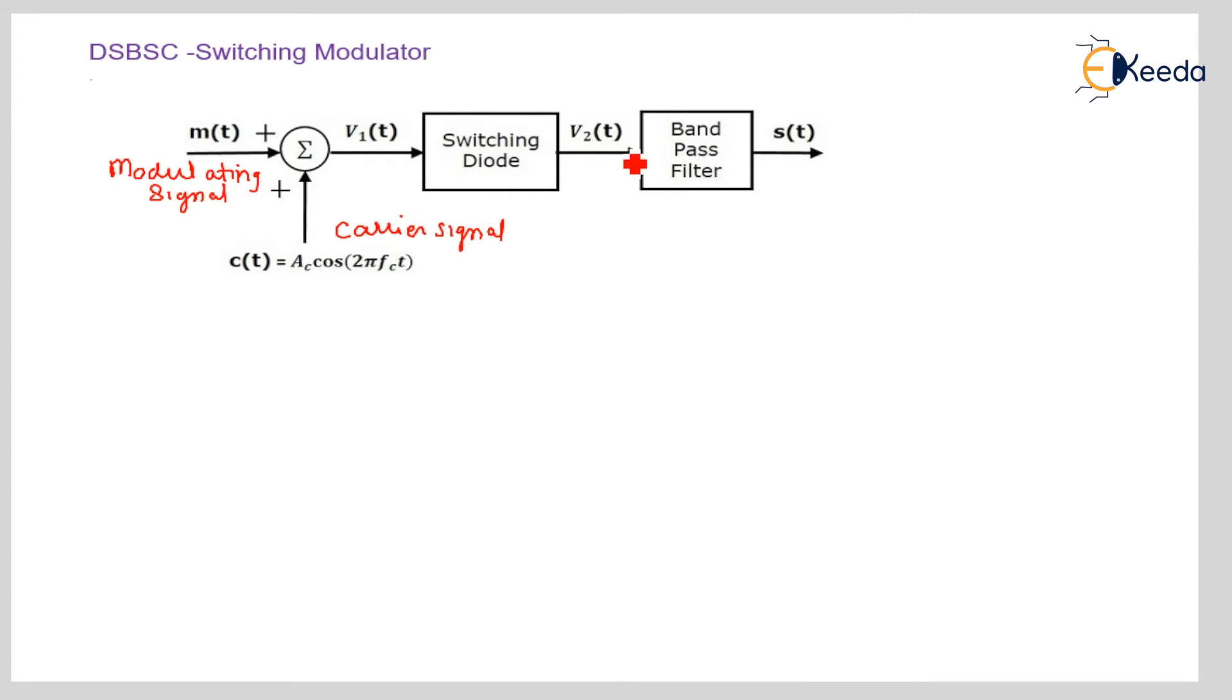So V2 of T is the output of switching diode, which is coupled to the bandpass filter. And output S of T is nothing but a modulated envelope of AM wave. Here, again double sideband suppressed carrier with a phase shift of 180 degrees at the end.